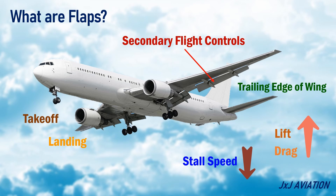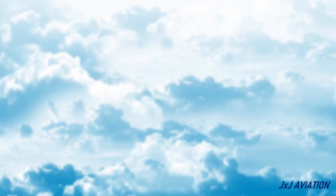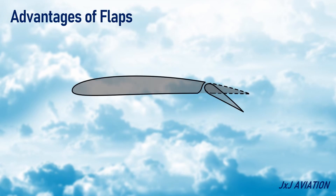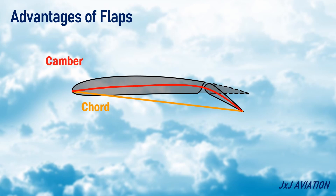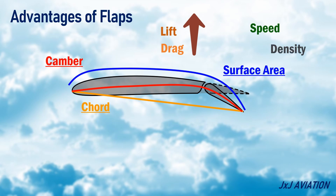Let's look at the advantages of flaps. When the flaps are extended, they increase the chord, camber, and surface area of the wing. This results in an increase in the lift and drag forces acting on the wing. This is because both lift and drag are directly dependent on these factors, along with the speed and the density of the air.